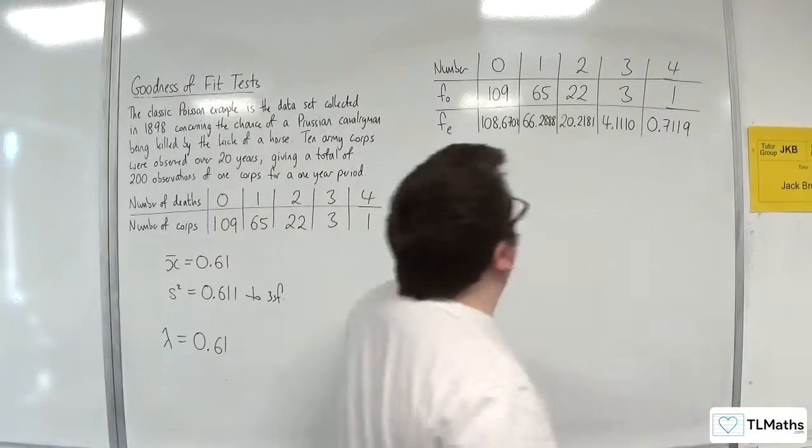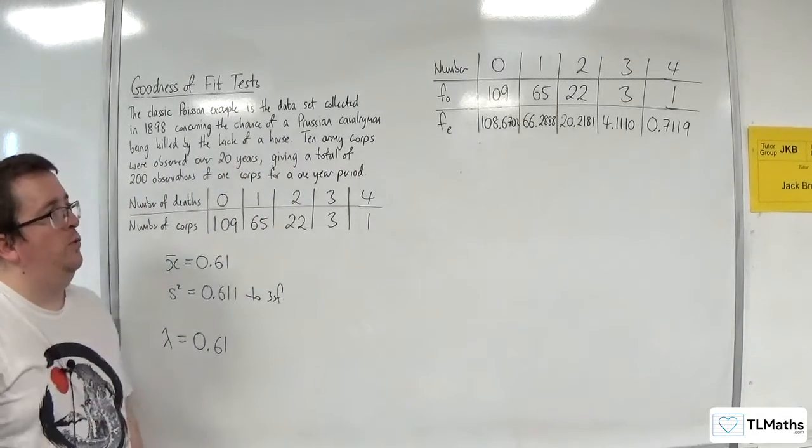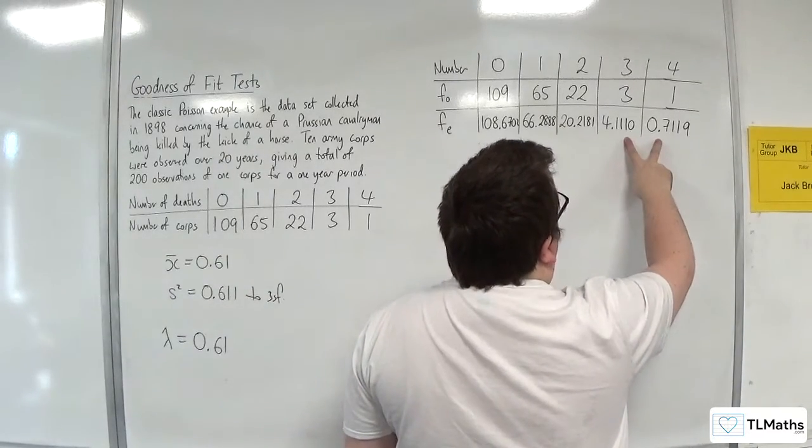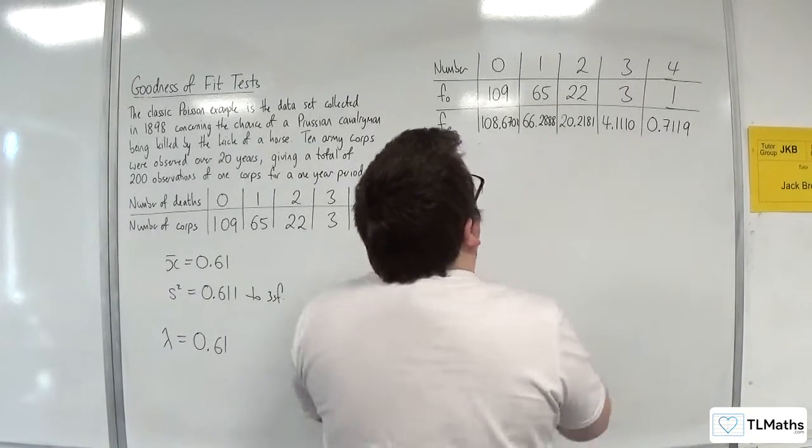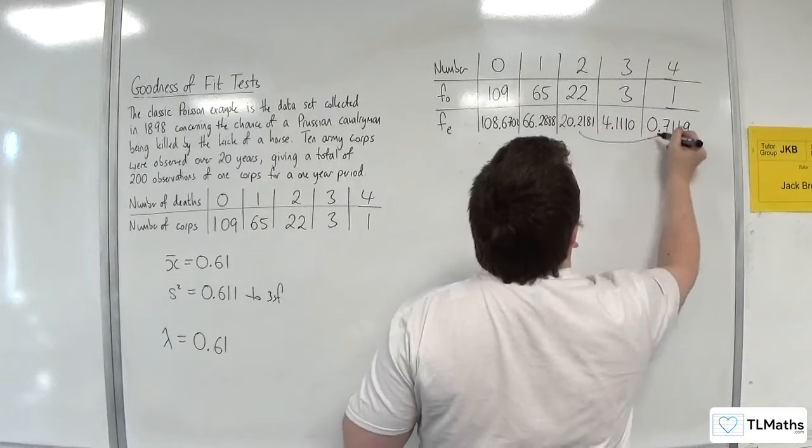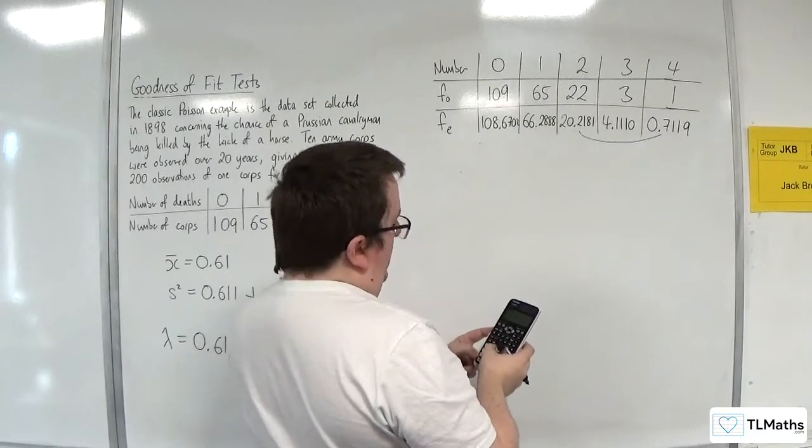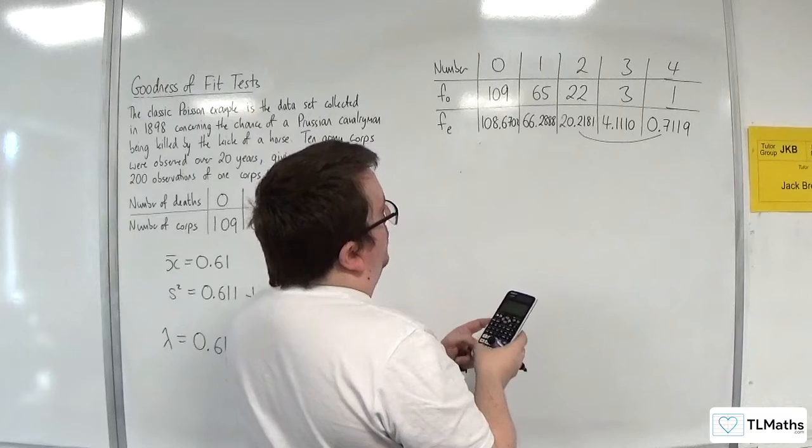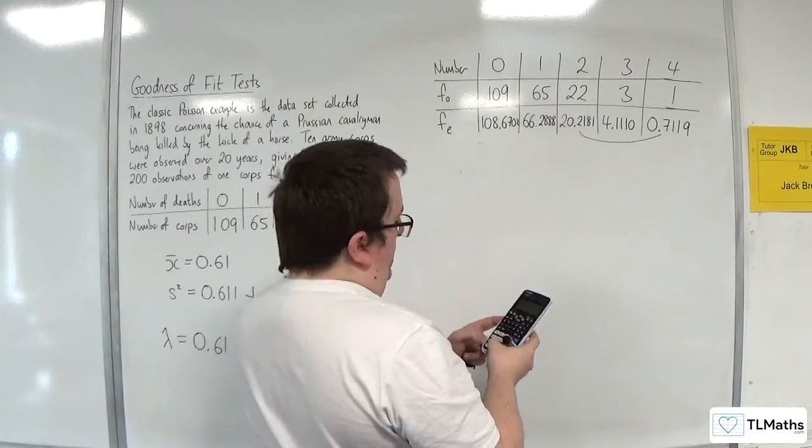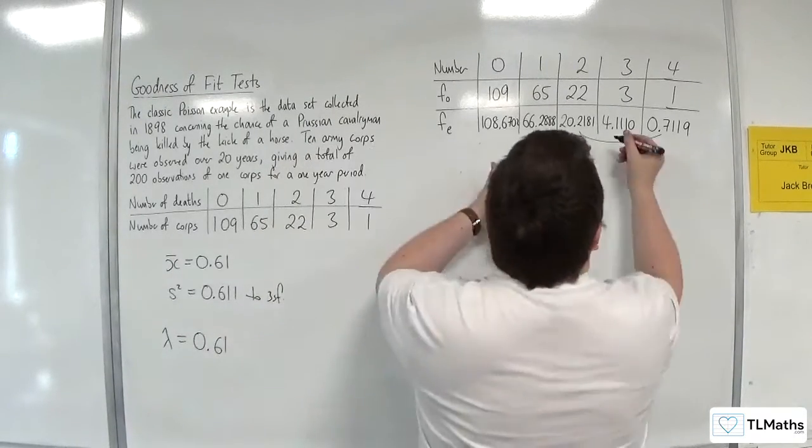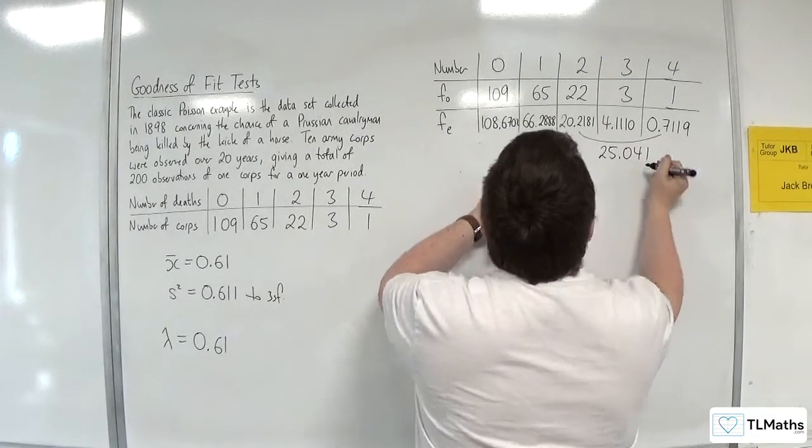Now, unfortunately, I've got two small expected frequencies there. And even if I add them together, I'm not going to get over 5. So I'm going to have to combine all three of those. So 20.2181 plus 4.1110 plus 0.7119. And we're getting 25.041.